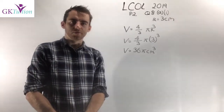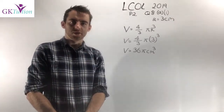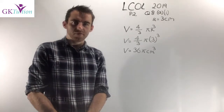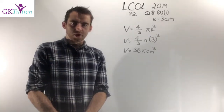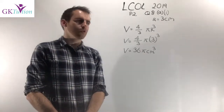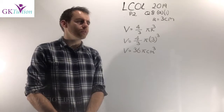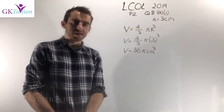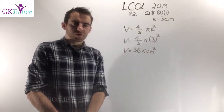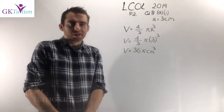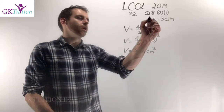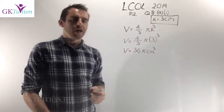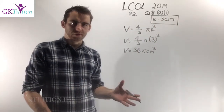Hi, I'm Paul Kilgren from GK Tuition. In this video I want to talk about area, volume and measurement. The question I've chosen to go through is 2019 Paper 2, Question 8, Part A. In the first part of this question, the only thing that's relevant is that we have a sphere of radius 3 centimeters and we're asked to find the volume of the sphere.